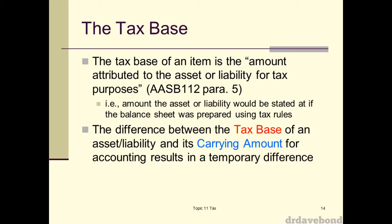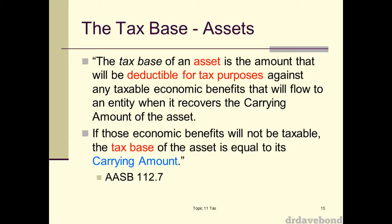The tax base of an item is the amount attributed to the asset or liability for tax purposes. If you want to think about it this way, it's like having a balance sheet calculated under tax rules. When we have a balance sheet for accounting rules created under the various AASBs — with property, plant, equipment, inventory and so on — the tax base is asking: if we were to use tax rules to come up with a balance sheet item, what would that number look like?